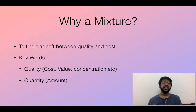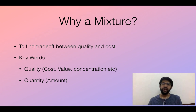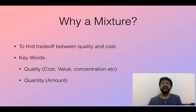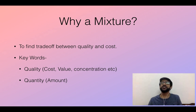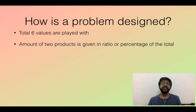Let us first see why at all we mix things — to create a trade-off between quality and cost. Everybody wants higher quality but nobody likes higher cost, so basically we need to make a trade-off to achieve a required quality with minimum cost. That is exactly why we mix things. The keywords here are quality and quantity. Quality can be represented in terms of cost, value, or concentration.